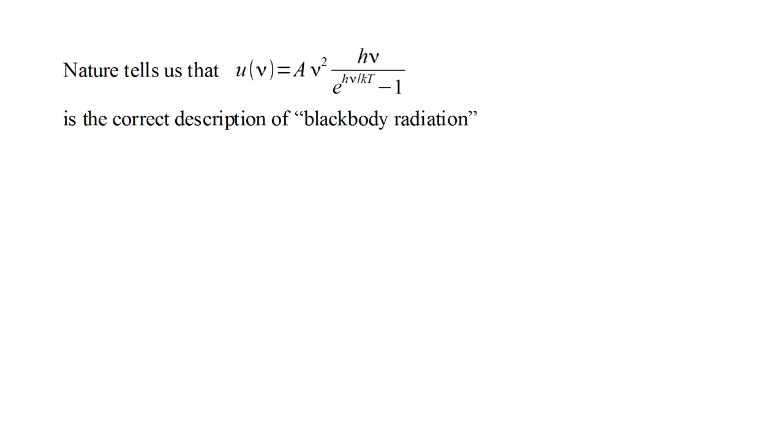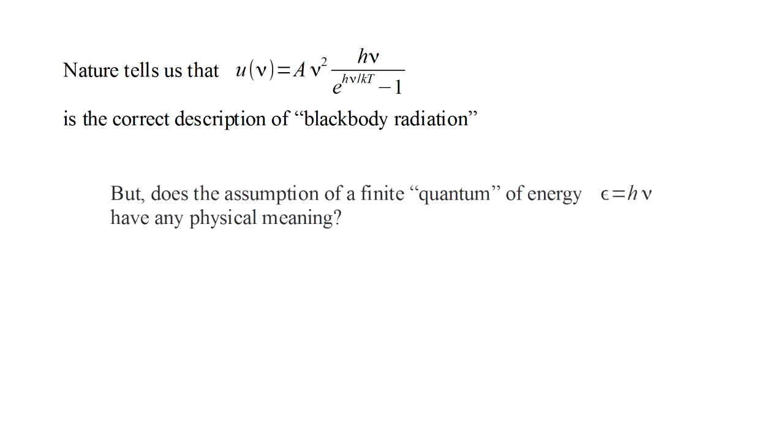So nature tells us that Planck's law is the correct description of black body radiation. But built into it is the assumption that there is a finite quantum of energy h times nu such that a mode of frequency nu can only have an energy which is an integer number of these quanta. Does this have any physical meaning? Initially, Planck and others treated it as just a formalism used to derive the correct law. Indeed, the concept of energy quanta seems laughably absurd from a classical point of view.